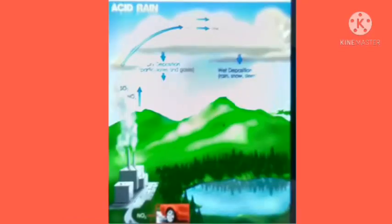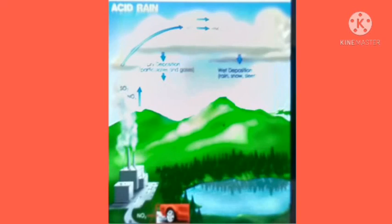Acid rain has many harmful effects. It damages wildlife in the ecosystem where it falls and can kill fish and other aquatic animals and plants. It makes the soil more acidic and less fertile, seriously damaging plant growth. It damages buildings and historical monuments made of marble and limestone because acids easily break down carbonates. Acid rain promotes corrosion of metallic structures such as bridges, and it damages the nutritional level of leaves of plants.